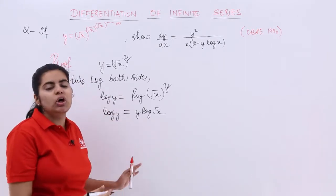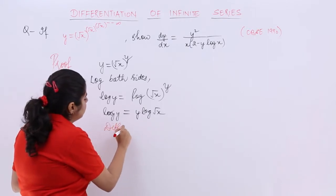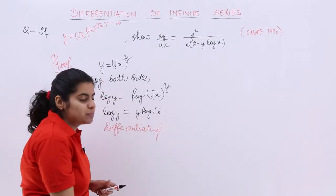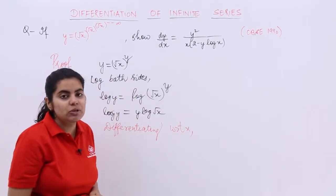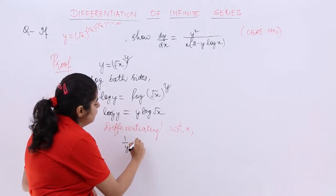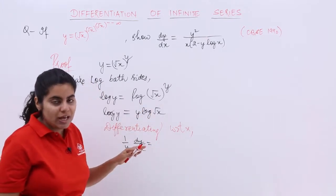Now most of you can solve it there and then only. Let's still solve it. We write differentiating with respect to x. Differentiating with respect to x gives me more. Log y's differentiation is 1 upon y dy by dx. y log root x.